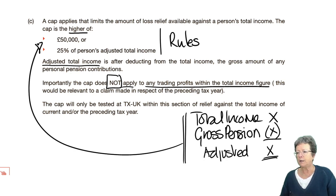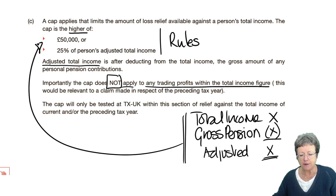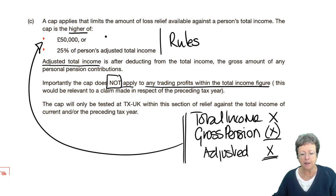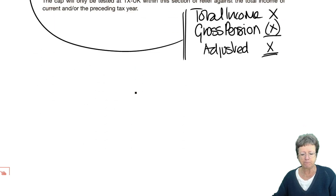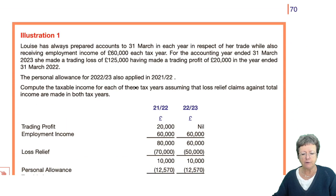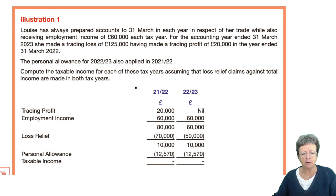There is a note that the cap will only be tested at the TX level within this section of relief — after the total income of a current year and/or claim for relief. We've got an illustration here which shows us how that works.